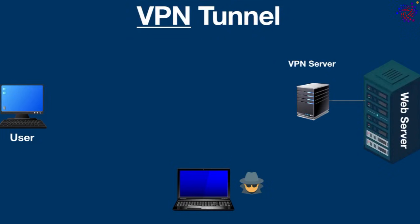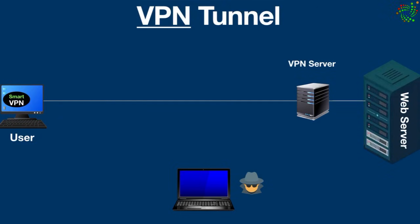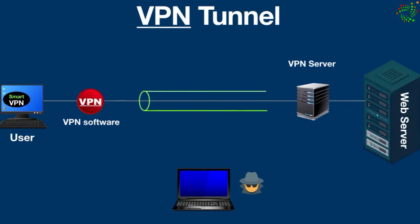Here is a step-by-step process showing how a VPN tunnel actually works. In the first step, the user chooses a VPN service. Once turned on, it connects the device to the VPN server, and the VPN software on the user's device creates a secure encrypted tunnel using different VPN tunneling protocols such as Point-to-Point Tunneling Protocol, Layer 2 Tunneling Protocol, Secure Socket Tunneling Protocol, IP Security, and so on.